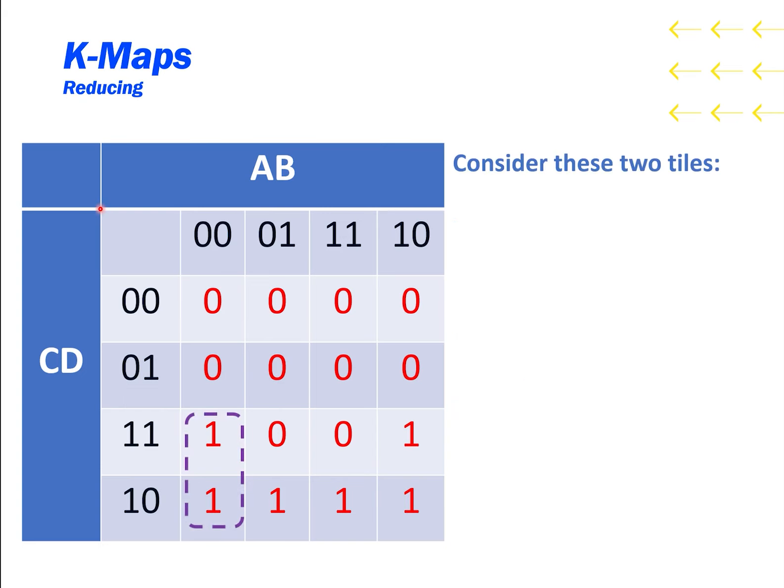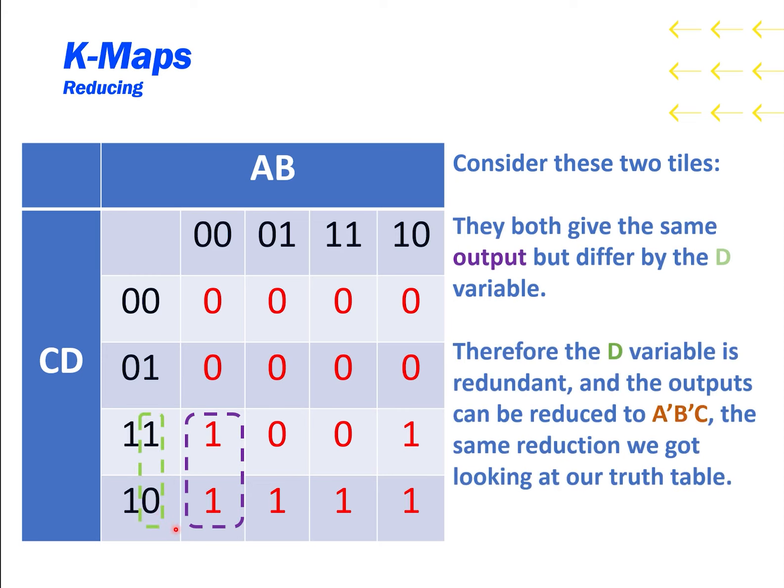Let's consider these two tiles. We can see that the first one is A', B', C, and D. The second one is A', B', C, and D'. They both give the same output of one, but differ by the D variable. Therefore, the D variable is redundant, and the outputs can be reduced to A', B', and C. The same reduction we got looking at our truth table.